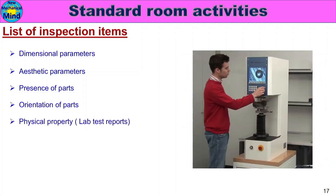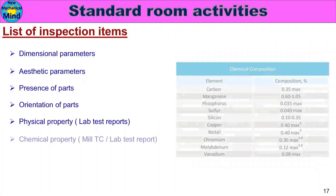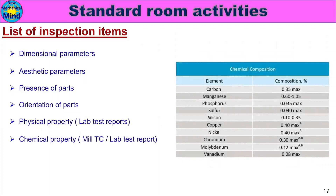Physical properties — checked via lab test reports and instruments. Chemical properties — elements such as carbon, manganese, phosphorus, and sulfur are checked.